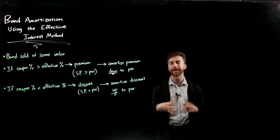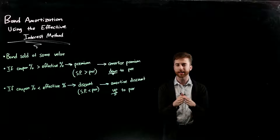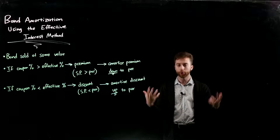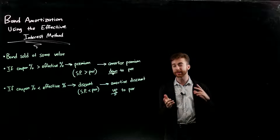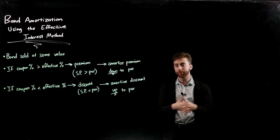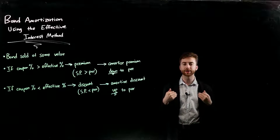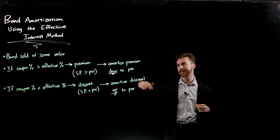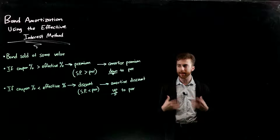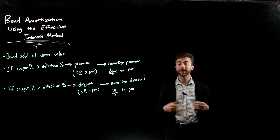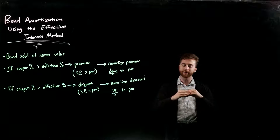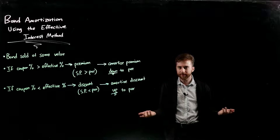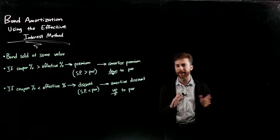Overall, the bond is going to be sold at some value. There's a par value associated with the bond that doesn't really change — it's just the stated value of the bond. But we have a coupon rate, which is the percent that the bond pays the consumer who purchased it. And then we have an effective percentage, which is oftentimes based on the market — what a normal bond of that type would go for. If the coupon percentage is greater than what you'd expect for a bond of that type — say the coupon rate is 10% and the effective rate is 8% — that means my bond is paying more than what the market would normally pay, so they will sell that bond at a premium, meaning the par value might be $1,000 and they're going to sell it for over $1,000. Because they're paying a percent greater than what the market would pay, that's a benefit to the consumer, so they charge a little extra to balance it out.